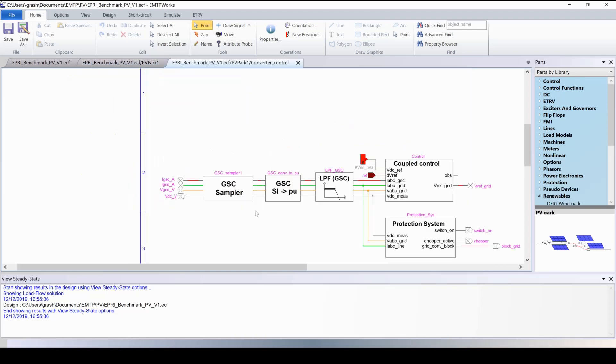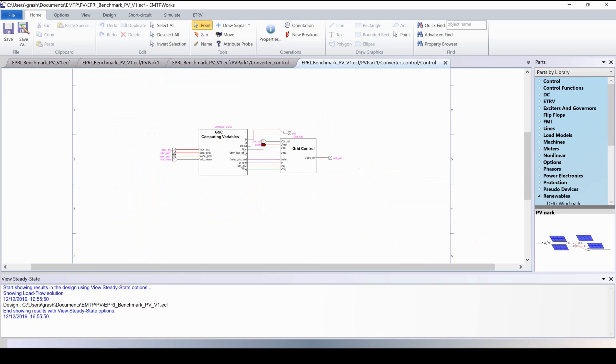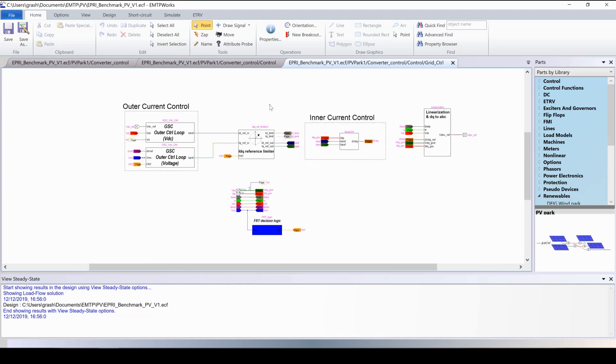We can see here the same scheme that was presented in the PowerPoint. And if we go in this block, coupled control, we can see here the compute variables block where the PLL can be found and where we go from ABC to DQ0, and the grid control block with the outer and inner loop.